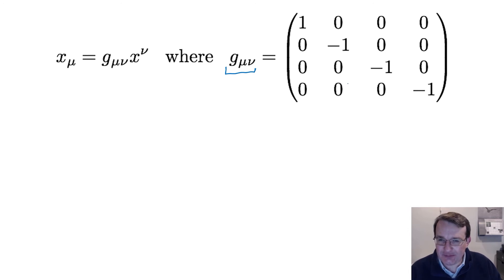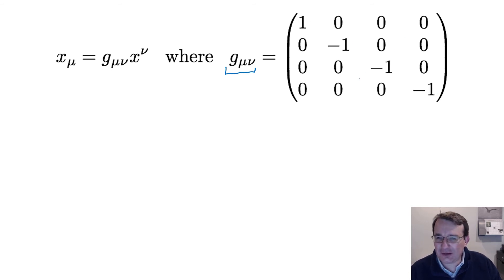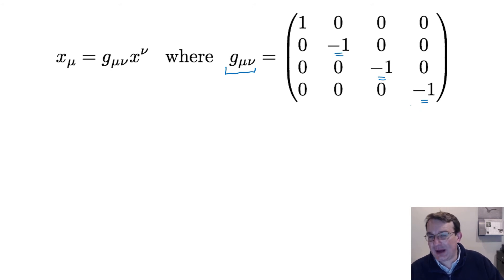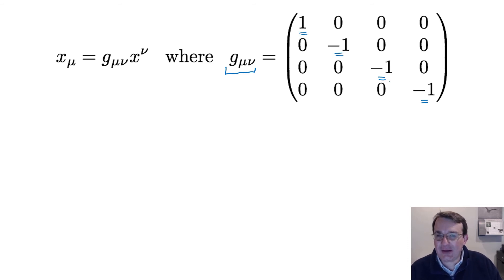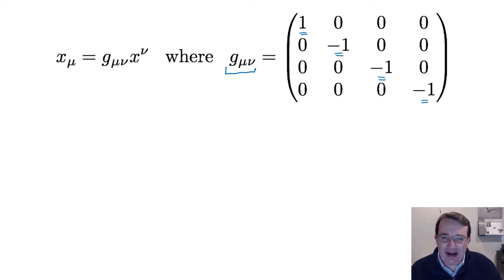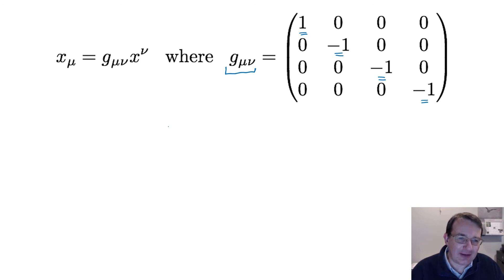Here we have how our two ways of writing the four-vector are related, along with our metric g_μν. For special relativity we always have exactly the same metric because we're working in flat space-time. The metric looks a bit like the identity matrix — ones along the diagonals and zeros off-diagonal — but three of the diagonal values are minus one. That is where we get the minus terms for the space-like components and the positive term for the time component.